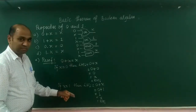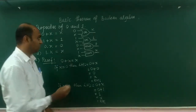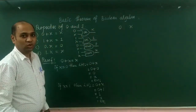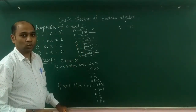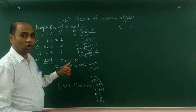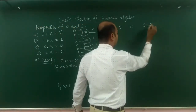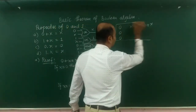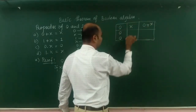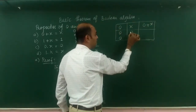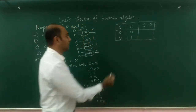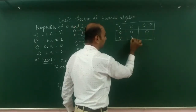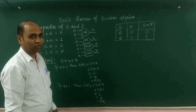Now let us prove the same with the help of a truth table. We have two columns: 0 is a constant and x is a variable, and we compute 0 OR x. The value of 0 cannot be changed, so it remains 0. The value of x could be 0 or 1. Performing OR between the two columns: false OR false is false, otherwise it is true. Hence the proof.